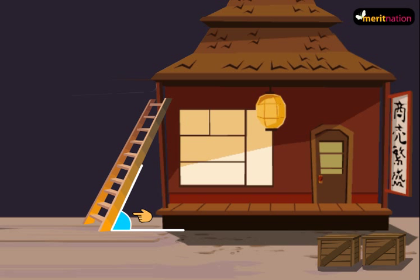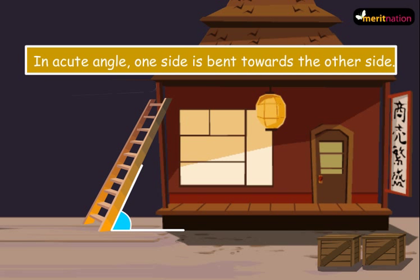Now is this a right angle? No, it is not. In this angle, one side is bent towards the other side. Such an angle is known as an acute angle. You want some examples?